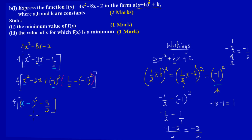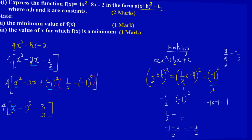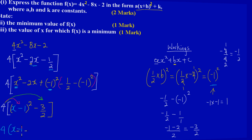Now the 4 is multiplying everything inside the bracket: 4 multiplies (x - 1)² and also multiplies the -3/2. So I write: 4(x - 1)² + 4 × (-3/2). Calculating 4 × (-3/2): 4 divided by 2 is 2, and 2 × (-3) = -6. So 4 × (-3/2) = -6.